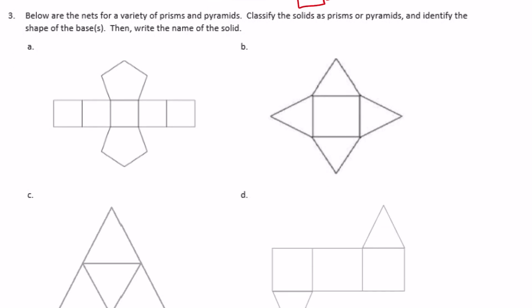Number three: below are the nets for a variety of prisms and pyramids. Classify the solids as prisms or pyramids, identify the shape of the base, then write the name of the solid. For A, I notice it has two of these shapes that would fold up to be the bases. Since there are two of them, that makes it a prism. The base has one, two, three, four, five sides — so it's a pentagon. We're going to call it a pentagonal prism.